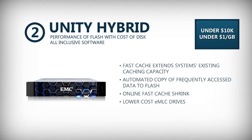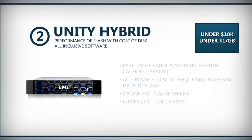Unity Hybrid will deliver the performance of flash at the cost-effectiveness of disk. Unity takes advantage of fully automated storage tiering for virtual pools, or FastVP, technology, that can lower TCO and increase efficiency by intelligently managing data placement and auto-tiering across tiers, where flash can be a performance tier.